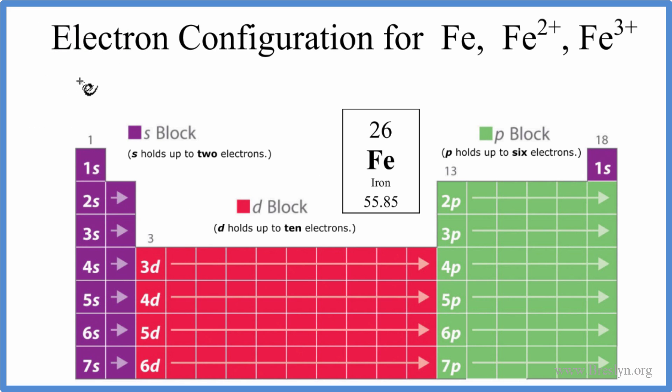Iron, 1s². That's where we start. We have 1s¹, 1s² because s orbitals can hold up to 2. Then we go to 2s. We have 2s¹, 2s². We've used four electrons, we have 26. Then we go to the p's. p orbitals can hold up to 6. So we'll go 2p, we'll put 6 in there. 3s². 3p⁶.